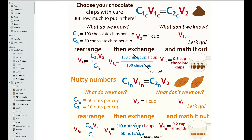We start by isolating the variable we need. For the chocolate chips, we divide both sides by C1c — the initial concentration of cookies, which is 100 chocolate chips per cup. It's easiest to rearrange the formula first and then substitute the known values. The units cancel out — chips per cup over chips per cup — and we end up with half a cup of chocolate chips.